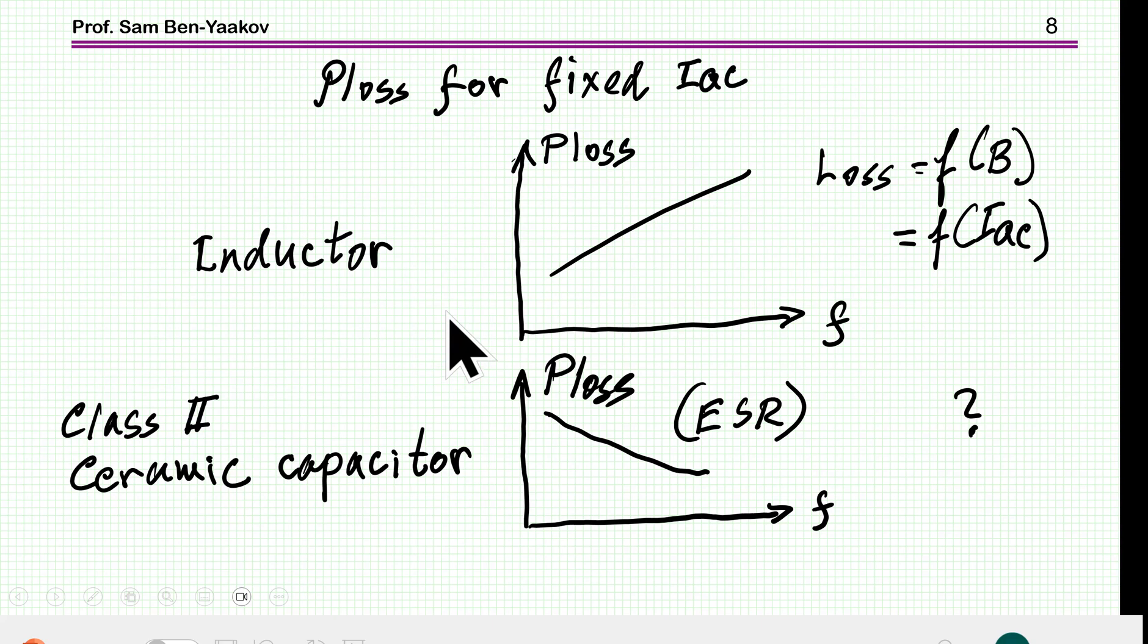And here is another point that needs perhaps clarification. We understand now the losses of the inductor for a given current will go up with frequency. Now, in the case of Class 2 ceramic capacitor like X7R, the losses are going down with frequency because the ESR is going down. So, for a given current, the losses are going down. So this is actually a behavior which is just the other way around. So, the question is, why is this so?